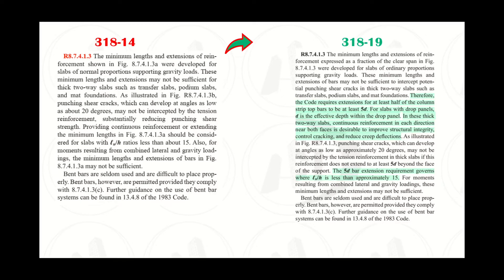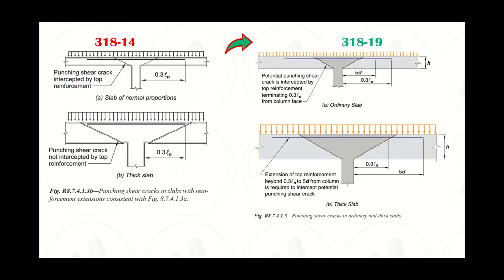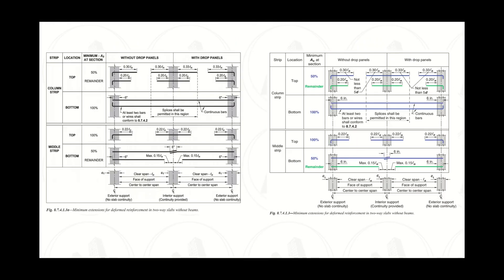The reason for extending the top rebars by at least five times the member depth is depicted in these figures. An extension of 0.3 will not intercept the shear crack in thick slabs, leading to brittle failure. These figures are referenced in section 8.7.4.1.3 in both codes, and the key difference is the minimum extension length — now required to be at least five times the member depth.